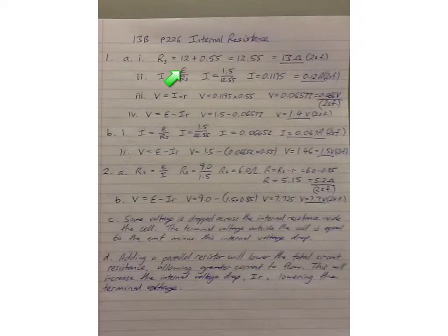given by that symbol epsilon, divided by the resistance you've just calculated in part 1, which is the total series resistance in the circuit, to find the total current. Using the unrounded number, you get 0.12 amps to two significant figures.